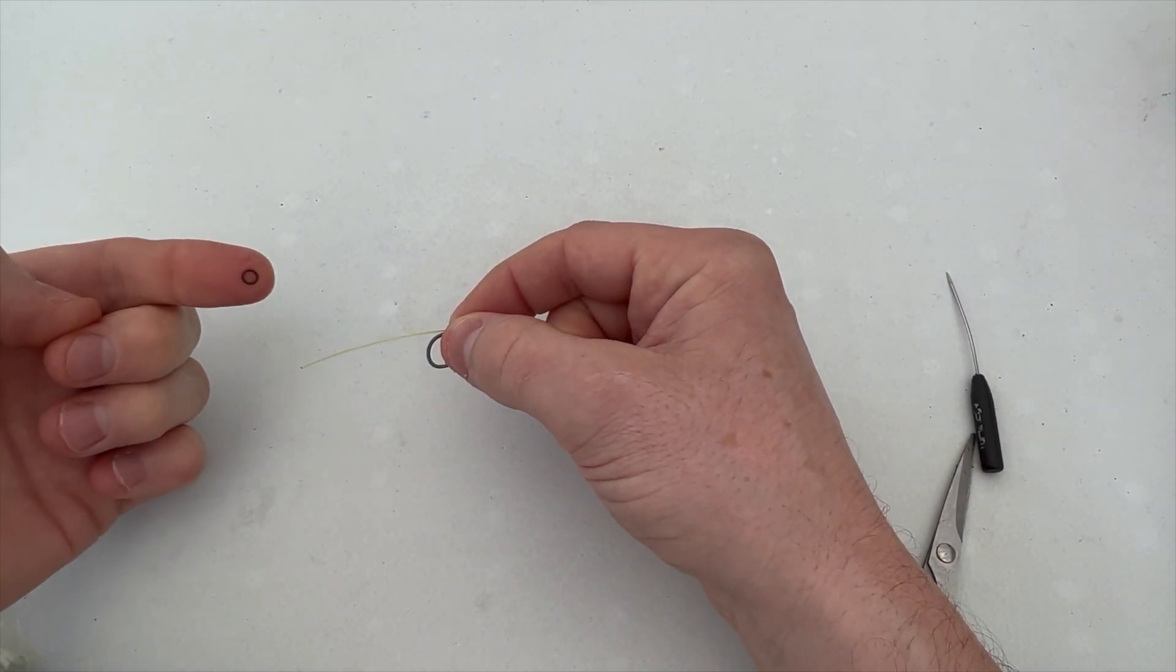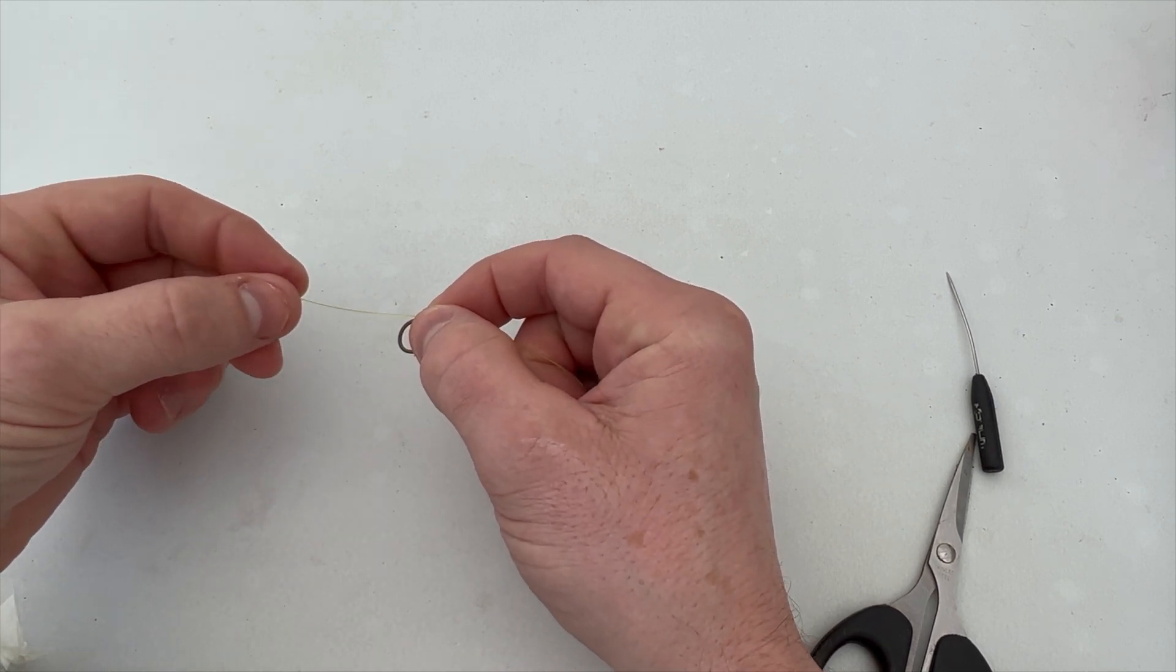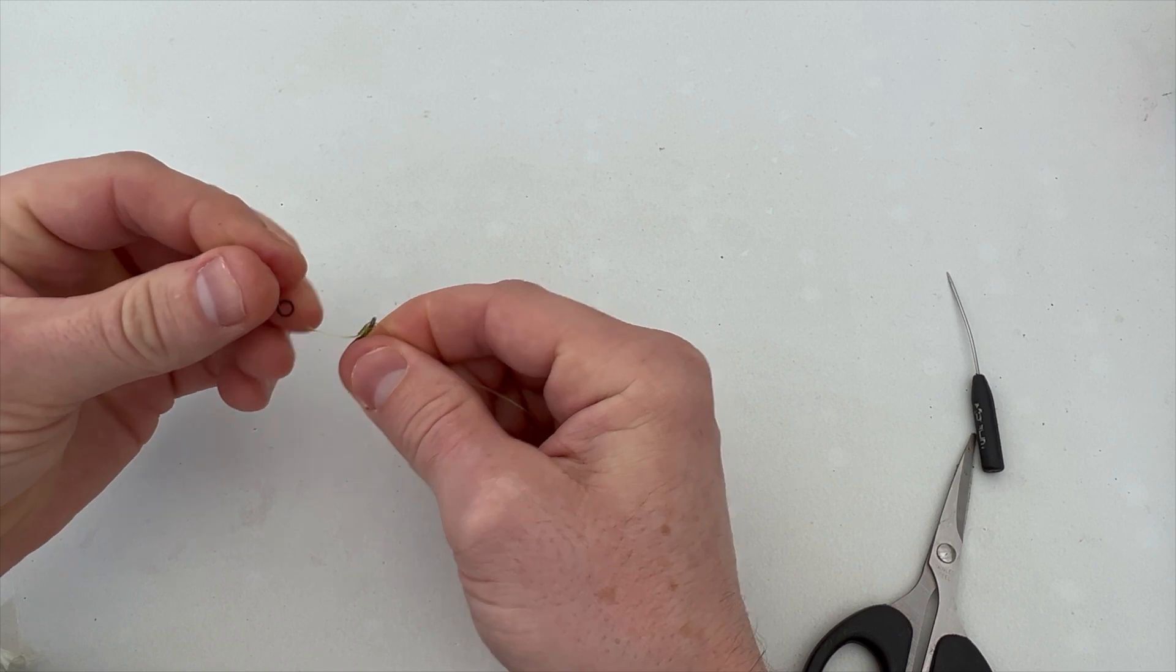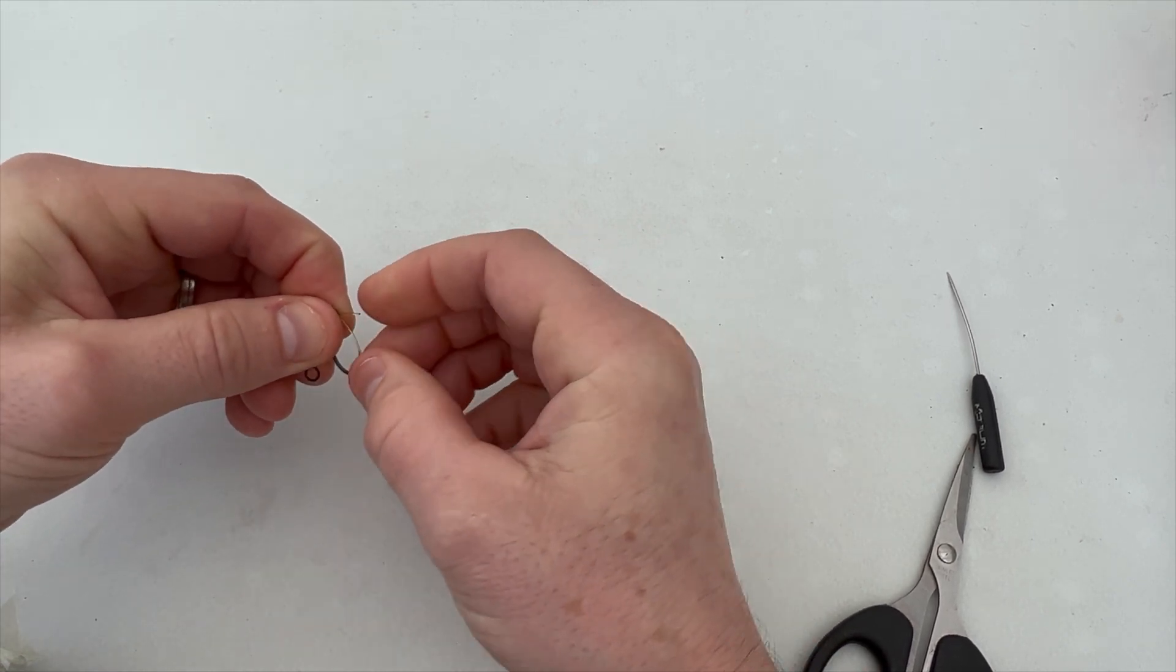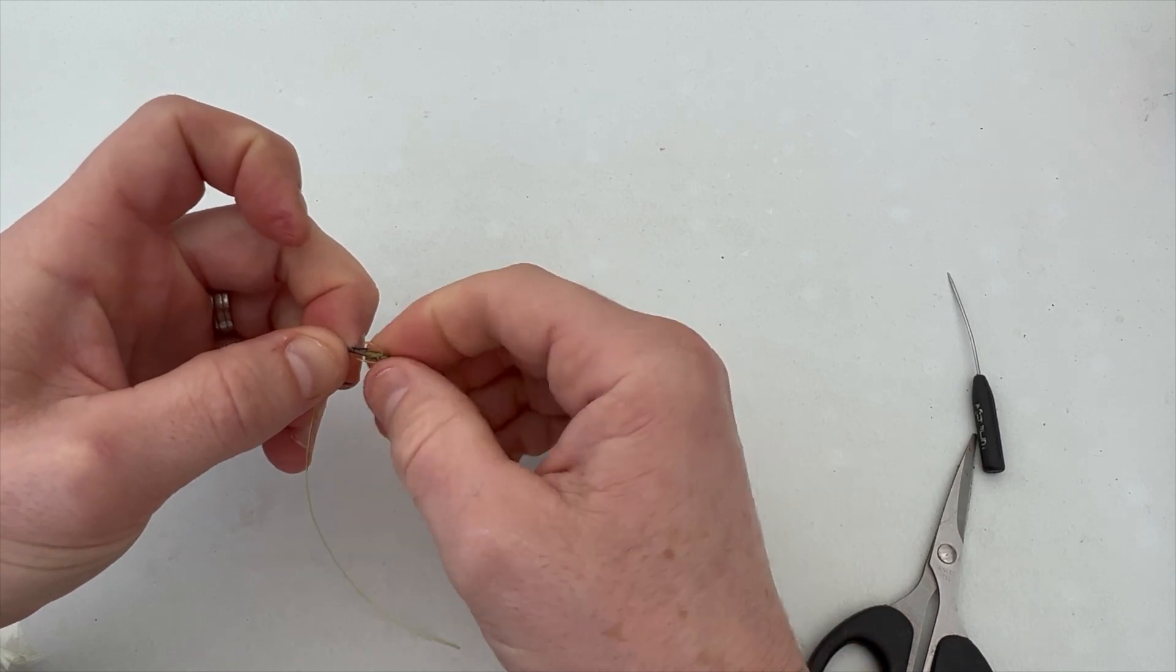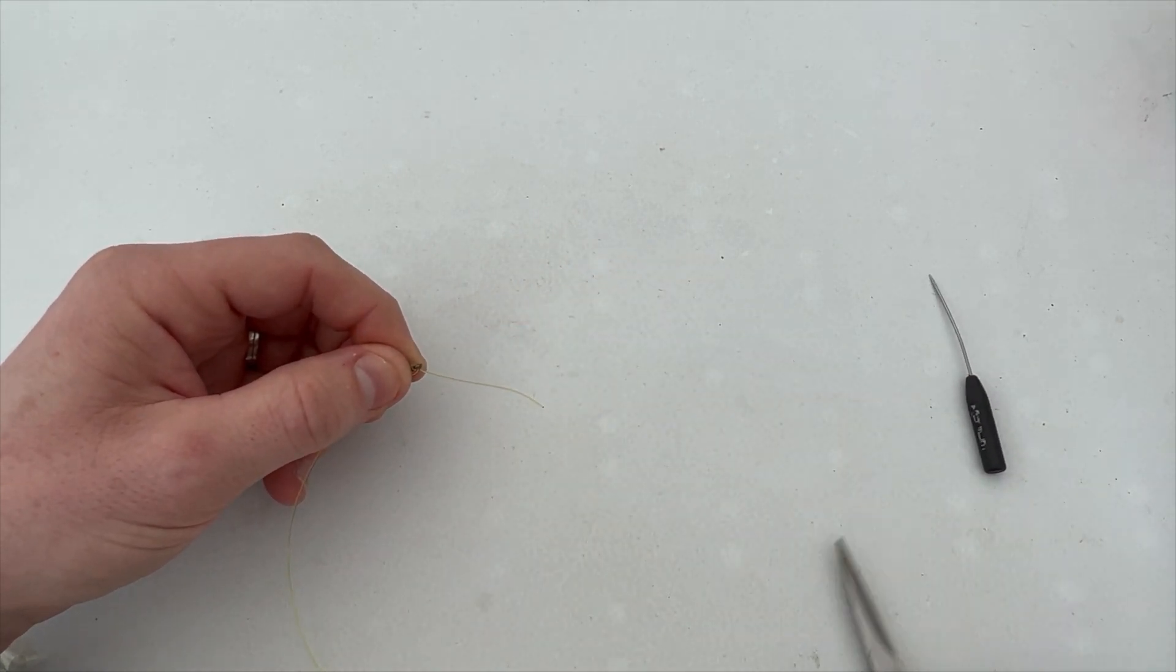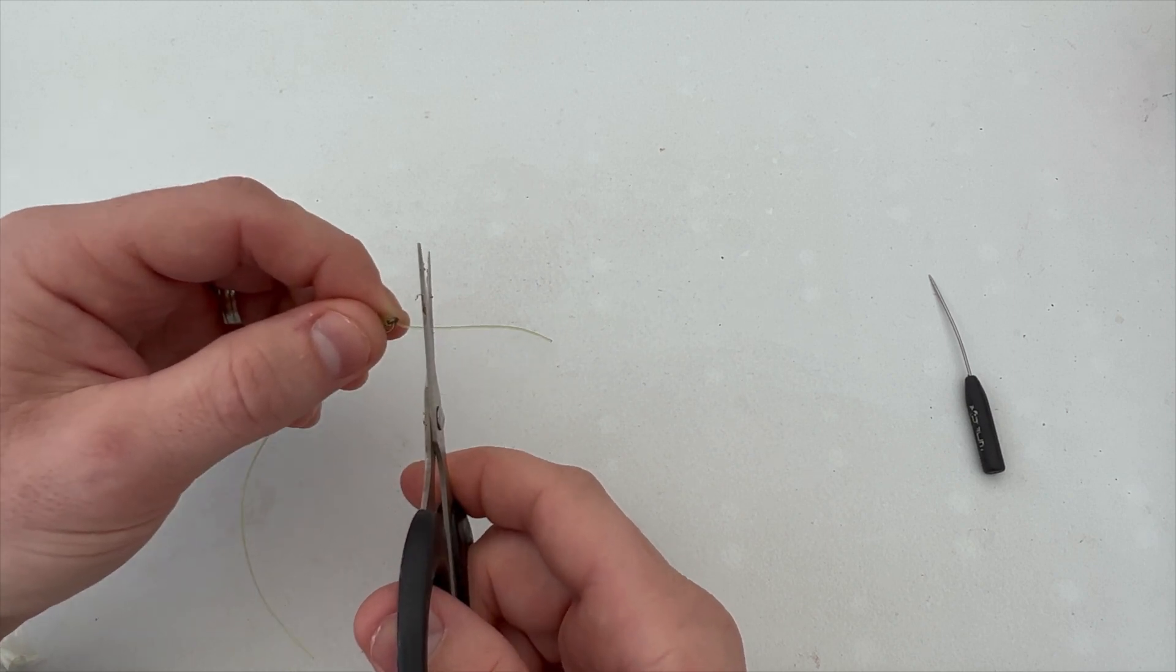We then want to take our rig ring, thread that onto the tag, take that tag end and put it back through the eye of the hook, pull this down fairly tight for a start. Now you probably want to leave, probably trim it down to a centimeter like so, just get rid of that.